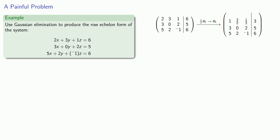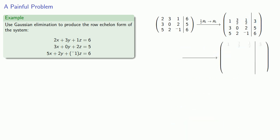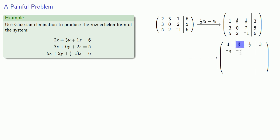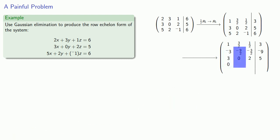Next, if we multiply this first row by -3 and add it to the second row, that will eliminate the entry below the first row pivot. Multiplying each term by -3: 1 × -3 = -3, 3/2 × -3 = -9/2, 1/2 × -3 = -3/2, and 3 × -3 = -9. Adding this to the second row: -3 + 3 = 0, -9/2 + 0 = -9/2, -3/2 + 2 = 1/2, and -9 + 5 = -4.